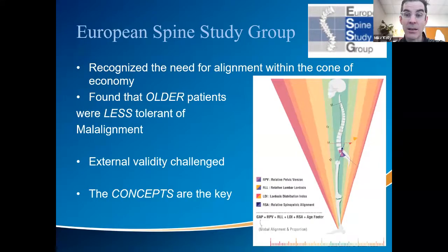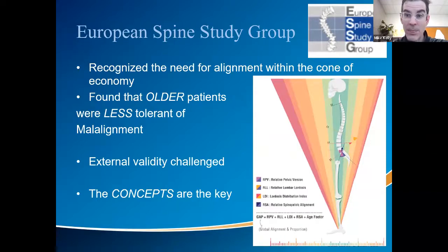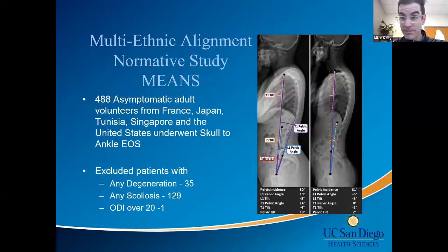That juxtafusional loading will sometimes lead to failure — not all the time, and that's the problem. We start to think it's okay because it doesn't fail all the time. In distinct opposition to age-adjusted targets, the European Spinal Study Group proposed the Global Alignment Proportion (GAP) study. If you read it carefully, you get a point just for being 65 — so the moment you're older, you're considered less tolerant of malalignment. They use mechanical failures like pseudarthrosis and PJK, which are clearly defined.